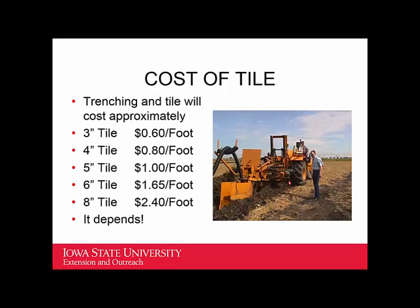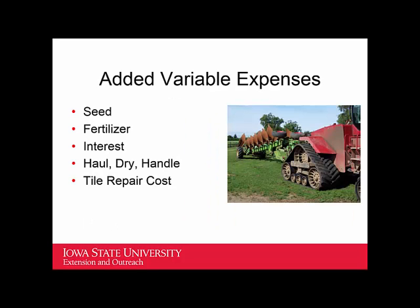The cost of tiling is always a question. It depends on the size of the tile, but when I try to get quotes from contractors, they tell me that if they've got to deliver a million and a half dollars worth of equipment to the field to start the job, they really need to know how big the job is. As a guideline, pattern tiling on fields runs anywhere from $400 to $1,000 an acre, depending on the cost of the outlets.